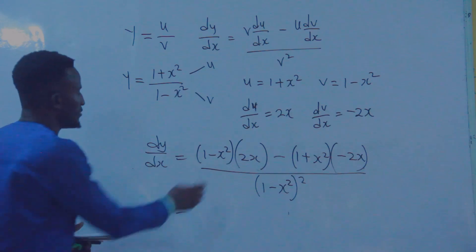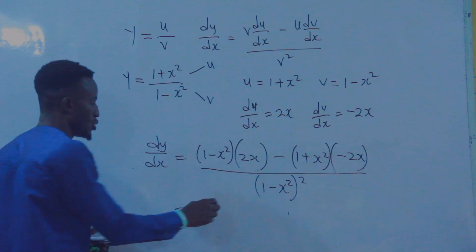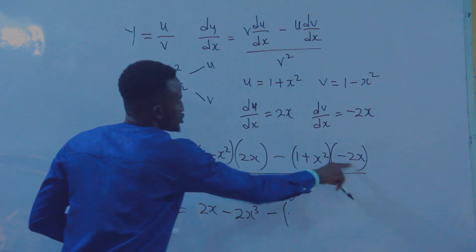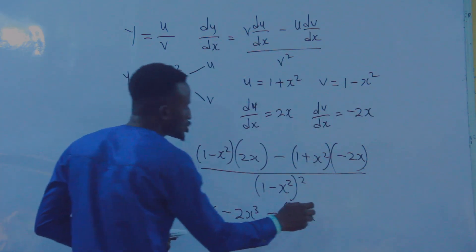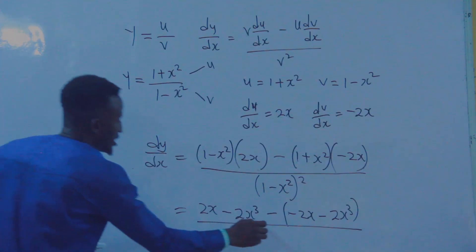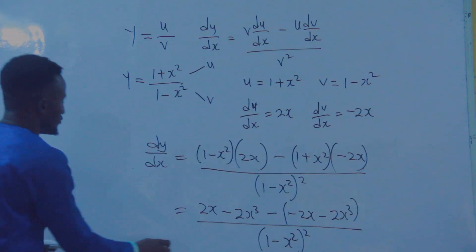If you open this, you have 2x times 1, that's 2x, then 2x times minus x squared, that's minus 2x cubed. Minus into the bracket of minus 2x times 1, that's minus 2x. Minus 2x times x squared, that's minus 2x cubed. All over one minus x squared, squared.